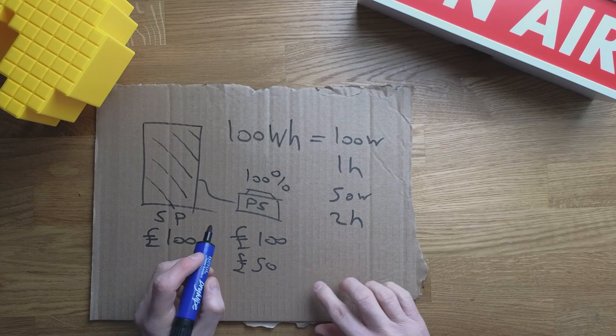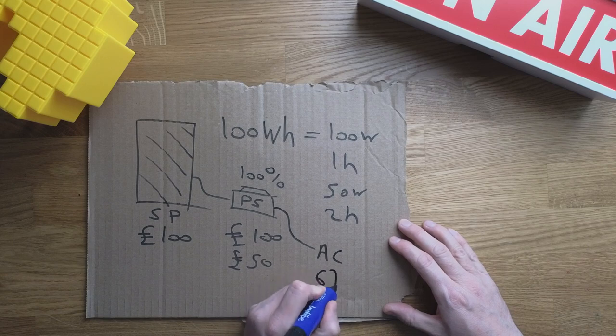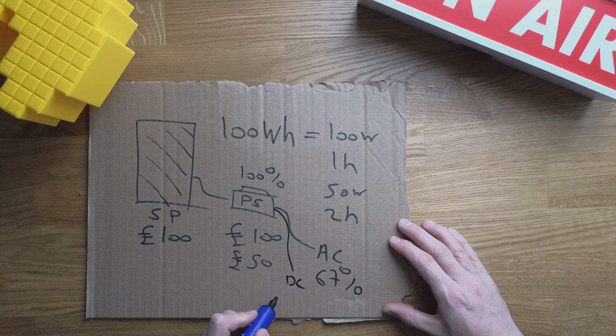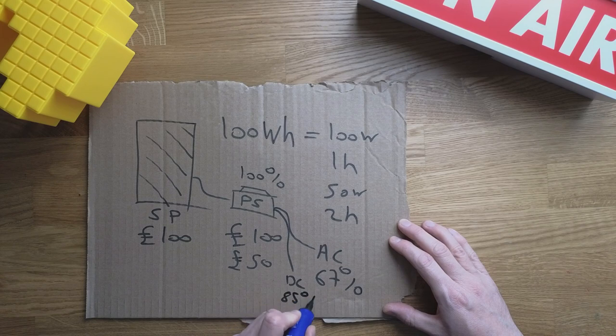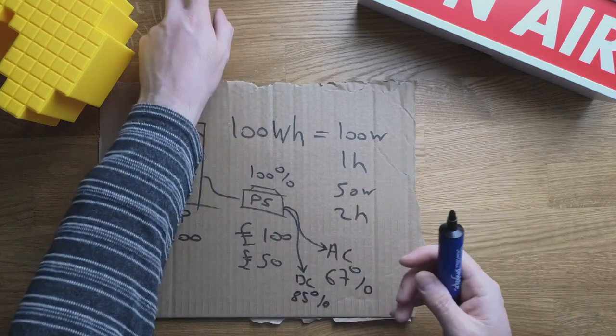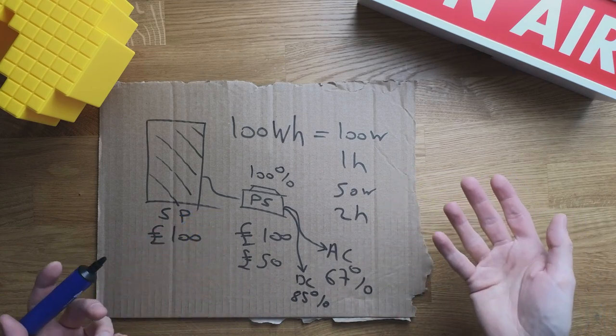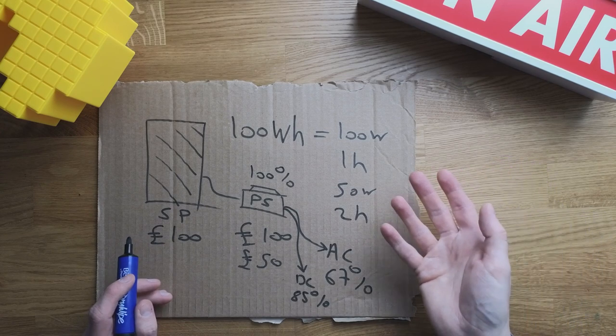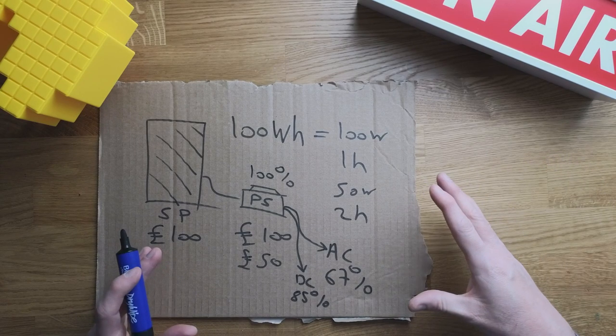However, what I found is you don't actually get that. If you're using AC, you get around 67% efficiency. And if you're using DC, that can be USB or the DC output, you're getting around 85% efficiency. Now in order to make this financial sense, you're going to want to use this with higher drain devices. You're not going to be charging your phone. Trust me on that. When you charge your phone, it maybe uses 15 watts if that's over USB. You want to be using it with higher drain devices.